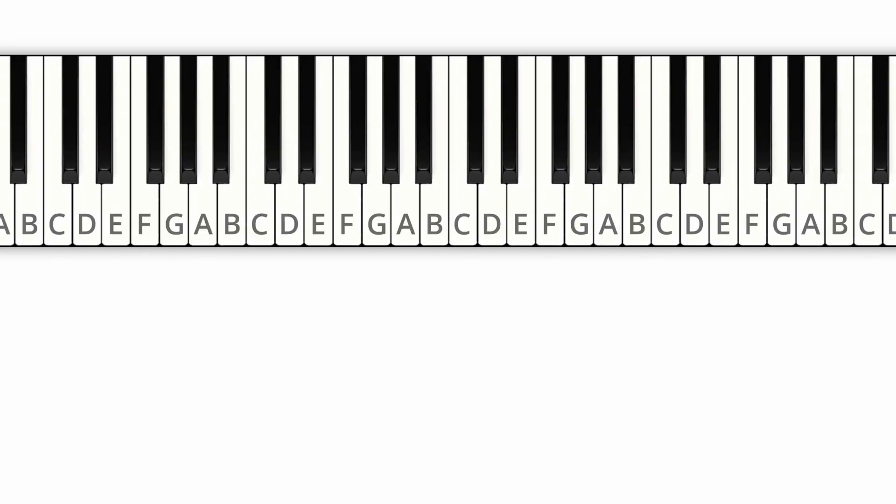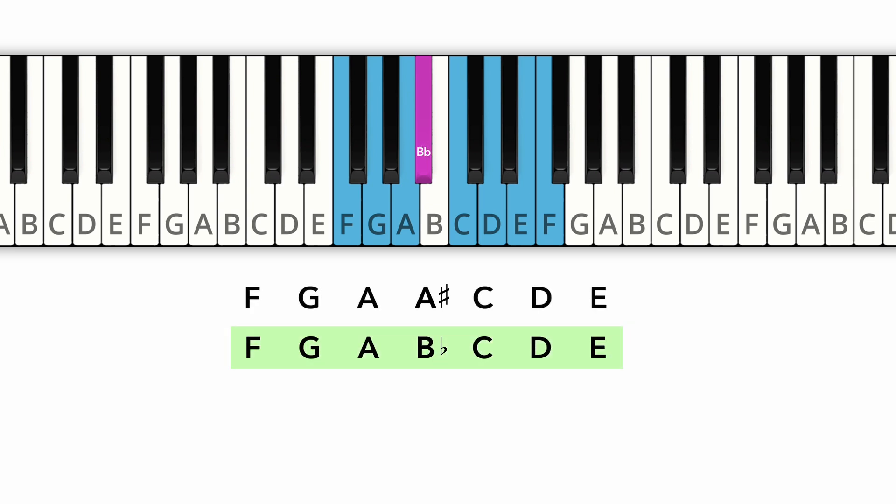For example, the black key that appears in the F major scale could be an A-sharp or a B-flat. Thanks to our 7-letter rule, we can tell at once that it must be a B-flat, because there can only be one A in our scale.